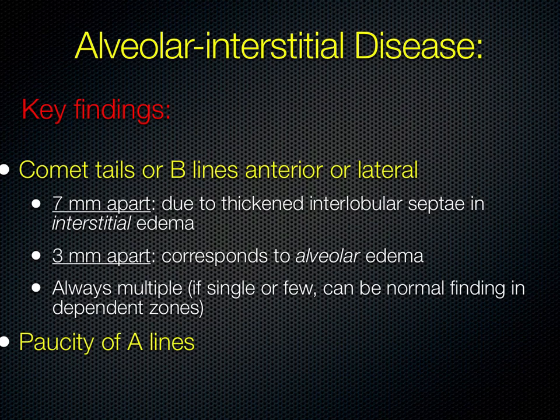When you have alveolar interstitial disease, the things you will look for are comet tails or B lines, anterior or laterally. You should see them in all fields because pulmonary edema should be diffuse, not one-sided. B lines 7 millimeters apart represent interstitial edema; 3 millimeters apart represents alveolar edema. If there are only a few or they don't extend all the way to the edge of the screen, that can be normal, especially in dependent zones. Pathologic B lines will obliterate the A lines.